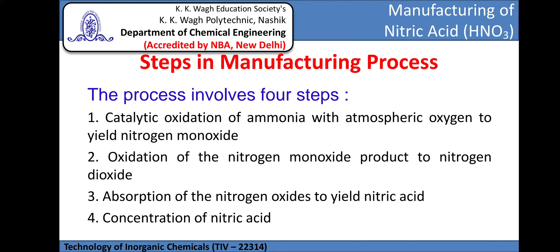This manufacturing involves four steps. The first step is catalytic oxidation of ammonia with atmospheric oxygen to yield nitrogen monoxide. The second is oxidation of nitrogen monoxide to nitrogen dioxide. The third is absorption of nitrogen dioxide to yield nitric acid. The fourth and important step concentrates the produced nitric acid to a higher grade.